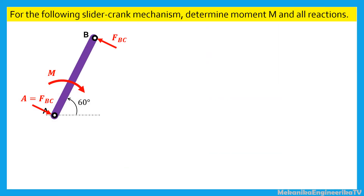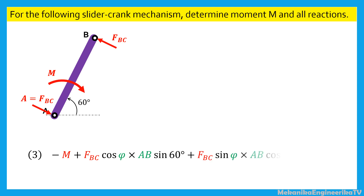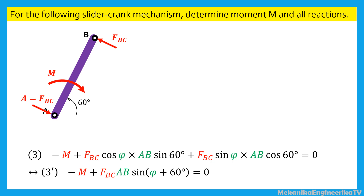For the bar AB, it is possible to write two forces equilibrium equations and one moment equilibrium equation. The two forces equilibrium equations are identically satisfied, as the reaction in A balances the reaction in B. We just need to write the moment equilibrium. The moment equilibrium equation about point A writes: minus moment M, plus FBC cosine phi times AB sine 60 degrees, plus FBC sine phi times AB cosine 60 degrees, is equal to zero. This equation is also equivalent to: minus moment M, plus FBC times AB times sine of (phi plus 60 degrees), is equal to zero.